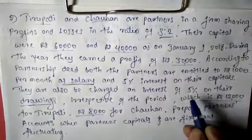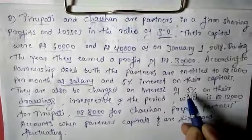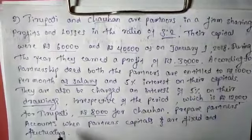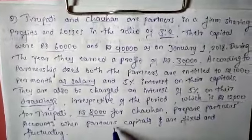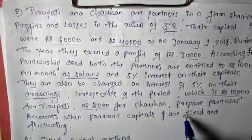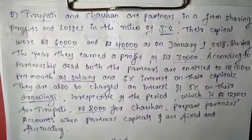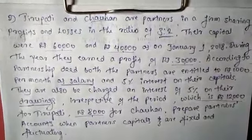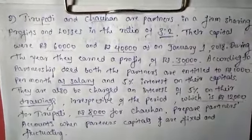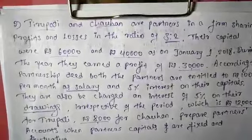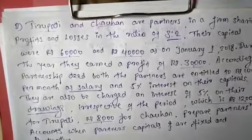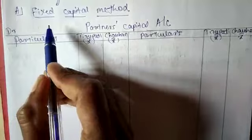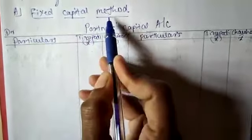On these drawing amounts, they are charged interest at 5%. We need to prepare partners' accounts when partner capitals are fixed and fluctuating. So let's start the solution under the fixed capital method first.